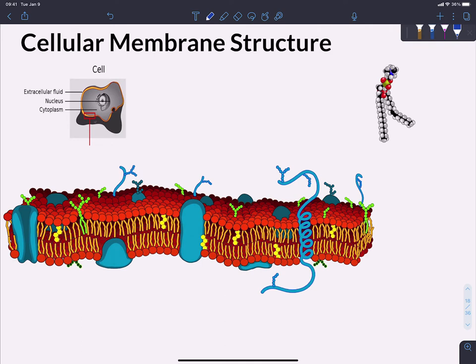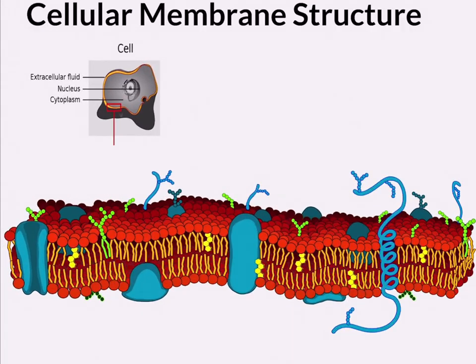This is a diagram of a typical cellular membrane — the plasma membrane, or the membrane external to the cell. Really, the composition of all membranes inside of eukaryotic cells share this overall structure. It has a name: we call it the fluid mosaic model of the membrane. Fluid meaning that the components are able to move around within the membrane, and mosaic like a composite image — the membrane is put together with different components.